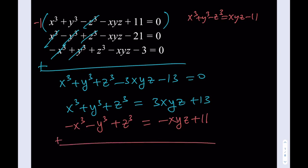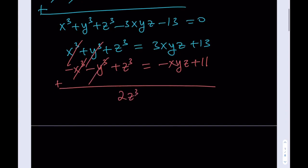So first of all, let's do this one. X cubed, y cubed cancels out. We end up with 2z cubed equals 2xyz plus 24, and that should give me z cubed equals xyz plus 12.